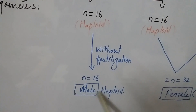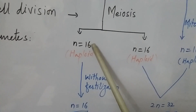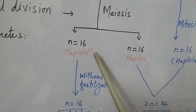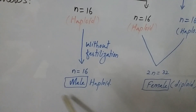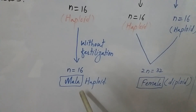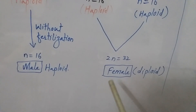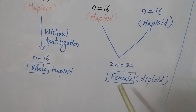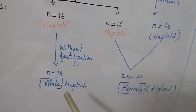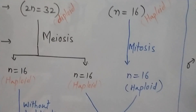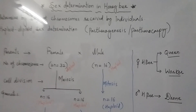The other female gamete directly converts into a male body without any fertilization. This female gamete, having the half number of chromosomes, becomes the male — that is, the drone — without the process of fertilization. In this way the drone and the queen or worker are produced, and this pattern is known as parthenogenesis.